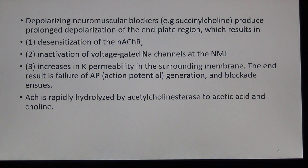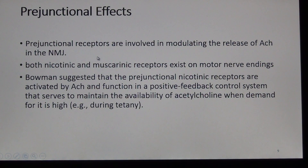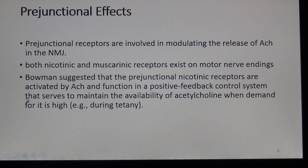Acetylcholine bound to the nicotinic acetylcholine receptor is rapidly hydrolyzed by acetylcholinesterase to acetic acid and choline. Prejunctional receptors are also involved in modulating the release of acetylcholine at the neuromuscular junction. Both nicotinic and muscarinic receptors exist on motor nerve endings. Bowman suggested that prejunctional nicotinic receptors, activated by acetylcholine in a positive feedback system, maintain acetylcholine availability when demand is high, such as during tetany.